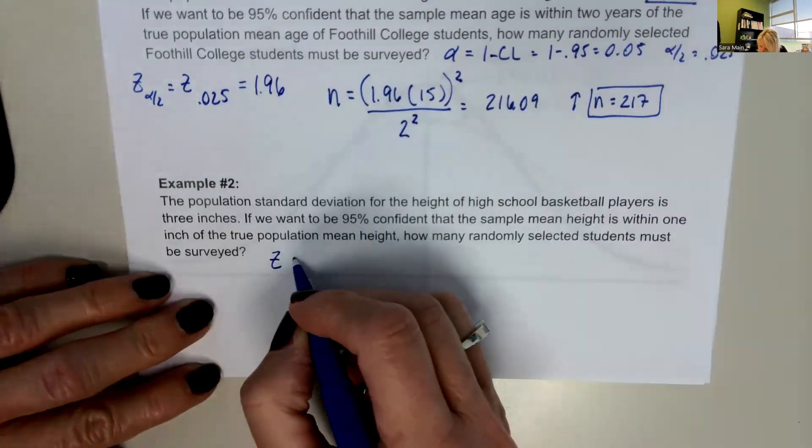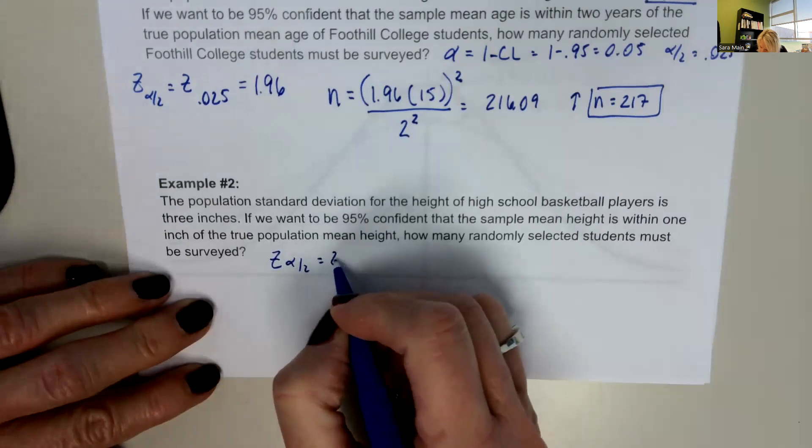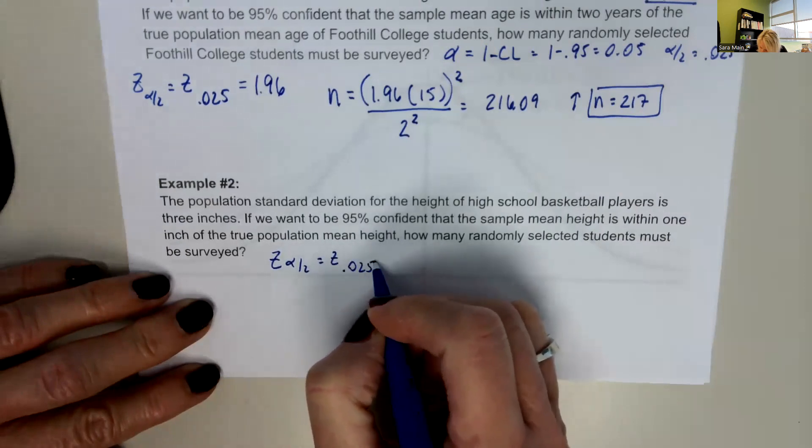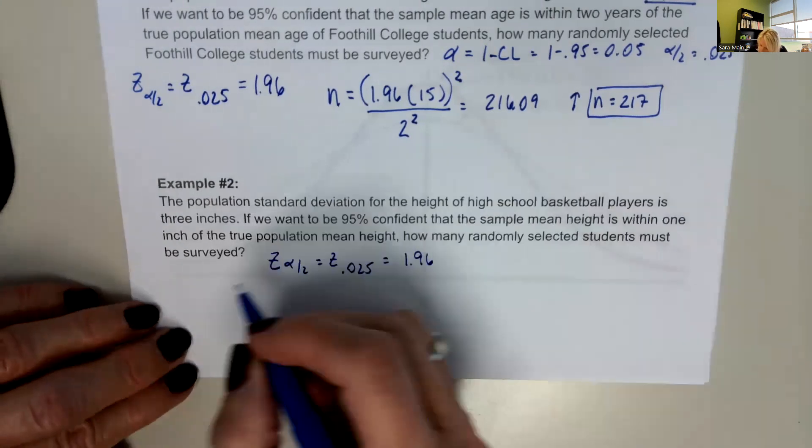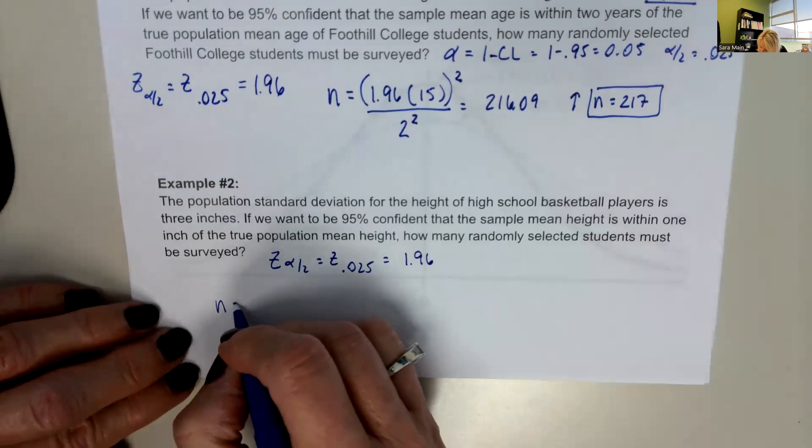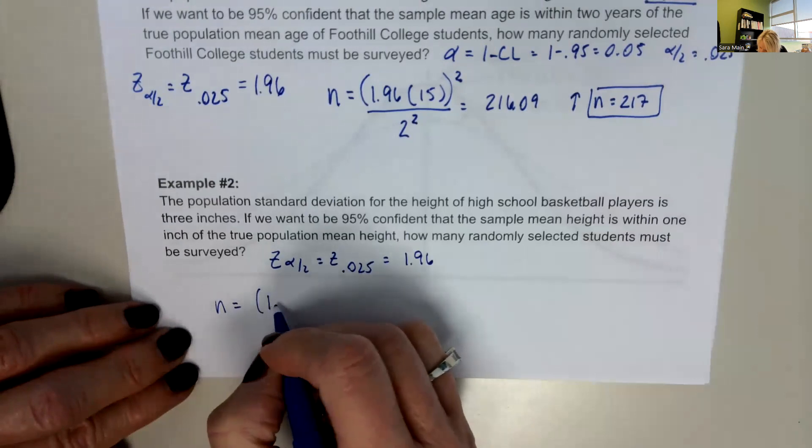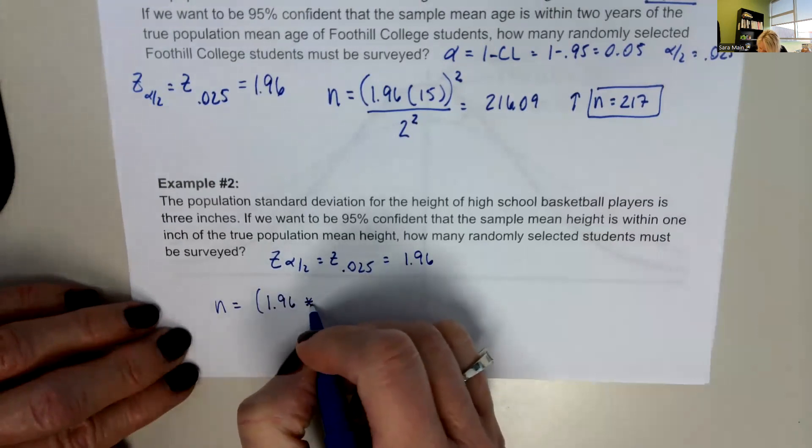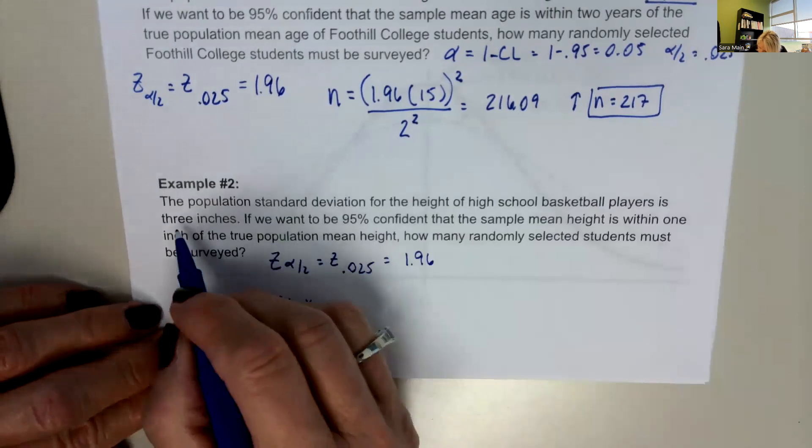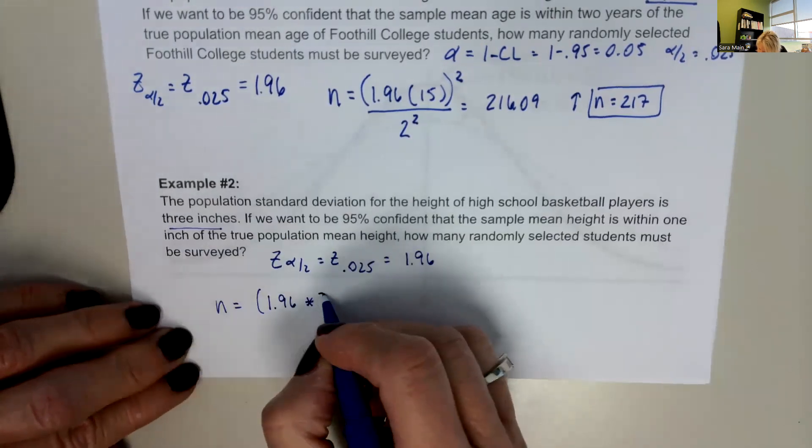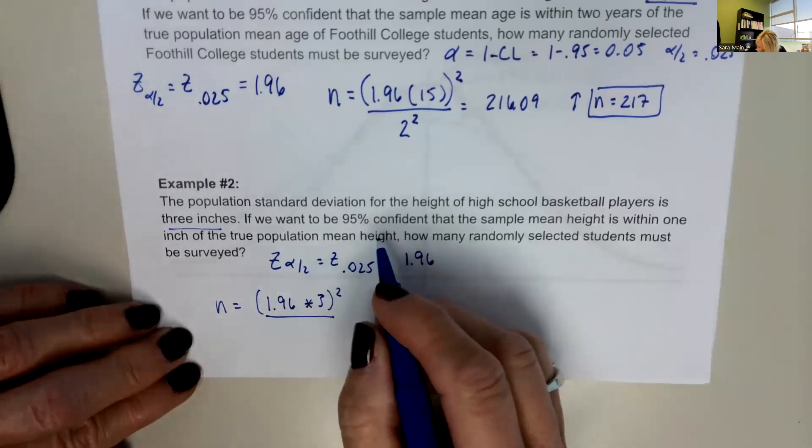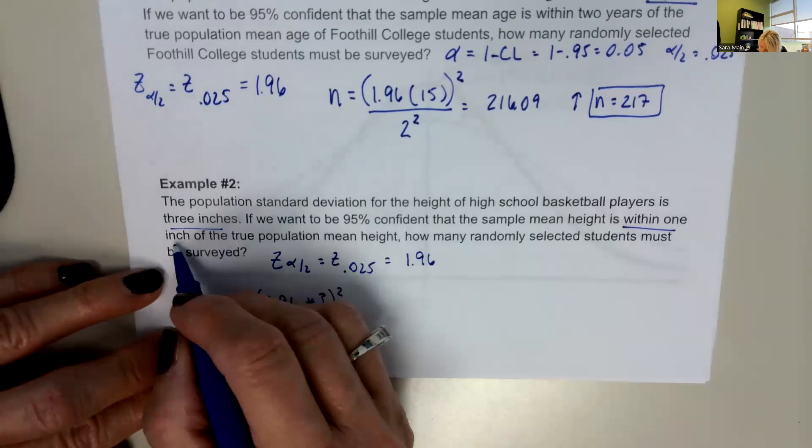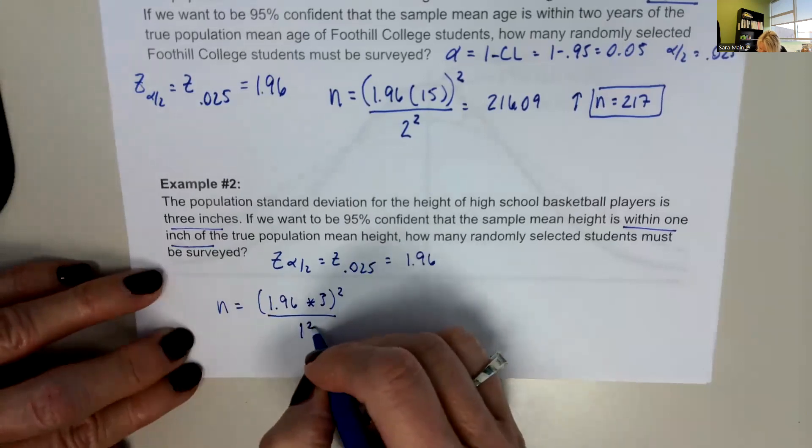So we already know our Z of alpha divided by 2 is Z of 0.025 is equal to 1.96. And so we know that n equals 1.96 times the standard deviation of 3, that quantity squared, all over the error, because it says within one inch. So one squared.